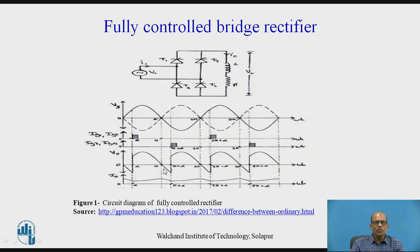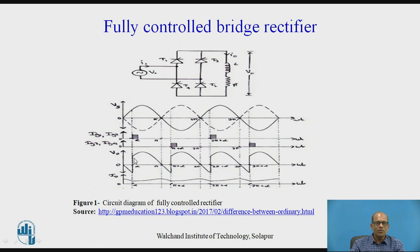This is the load voltage waveform for the continuous current mode. If the load is highly inductive, then at ωt equal to α, a positive gate pulse is applied to the gate of SCRs T1 and T2. T3 and T4 are reverse biased and will not conduct, so SCR 1 and 2 will conduct. Therefore, load voltage equals the input voltage, neglecting the voltage drop across the SCR.